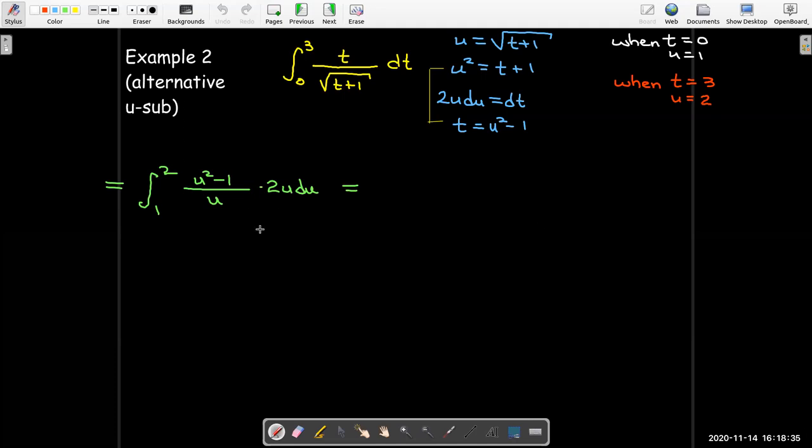All right. Making our substitutions, what did I do here? I put in my new bounds. I replaced the t with u squared minus 1. I replaced the radical, the whole thing, radical t plus 1 now is u. And then my dt is replaced with 2u du. And so we can see some nice simplification to use. I have a u over u, which equals 1. The 2 I can go ahead and bring out in front of the integral sign. And so now I'm left with just a polynomial. So not so much work to do in the integrand here. So I just have a polynomial u squared minus 1.